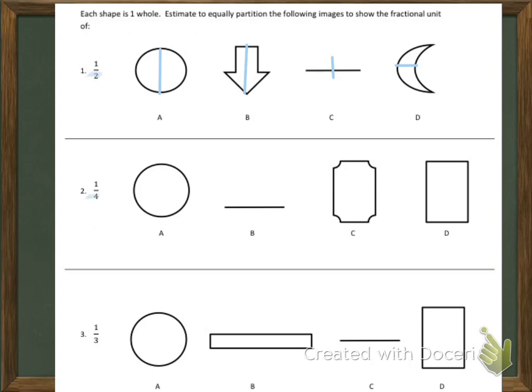Let's go on to two. This time we need four fractional units. I'm just going to do A and B. For A, we're going to draw one line vertically and one line horizontally. For the next one, I'm going to split the line in half first, and then each side we're going to split in half. So now we have four equal units.